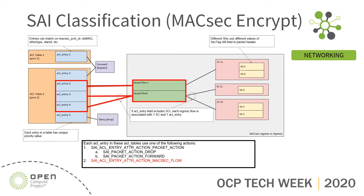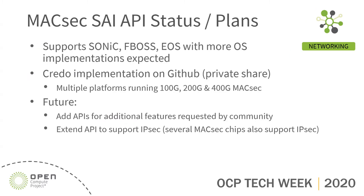There's a lot of code behind all this: SAI code corresponding to programming the ACL tables in the classification portion, code defining the different keys being used and the different security associations. In 20 minutes it's difficult to walk through code, so I'm walking through the architecture of SAI. As for status today, this is running on several operating systems — Sonic, FBOS, and EOS. I've seen the Sonic, FBOS, and EOS implementations so far.